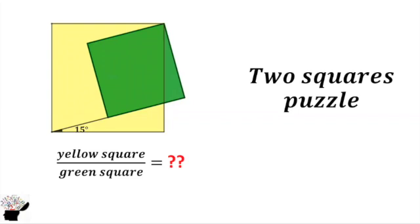We have two squares. One is yellow, one is green, and it is inclined at 15 degrees as you can see here. We are supposed to find the ratio of yellow square to the green square. How can we solve this geometrical puzzle?